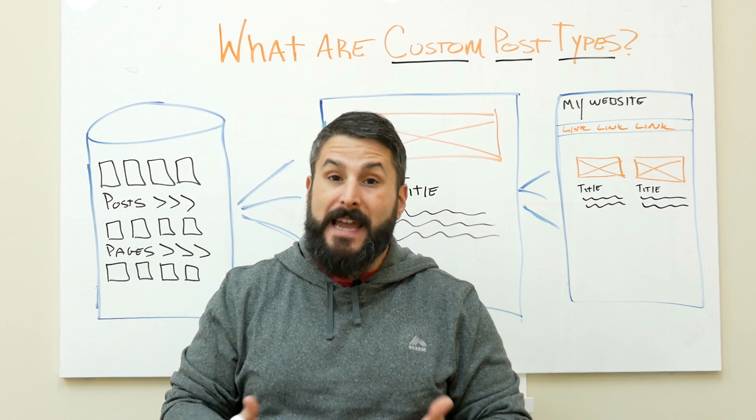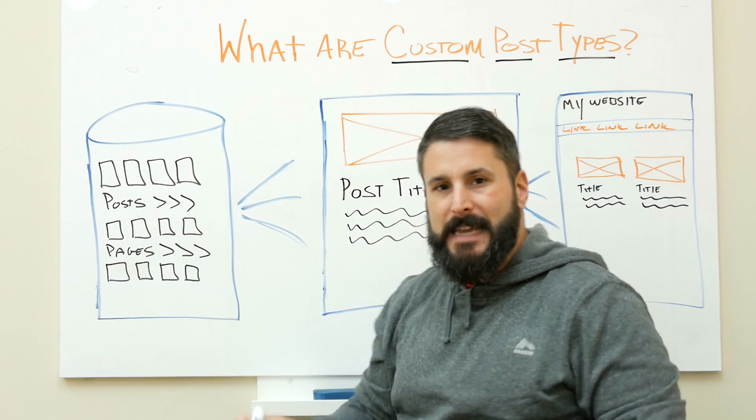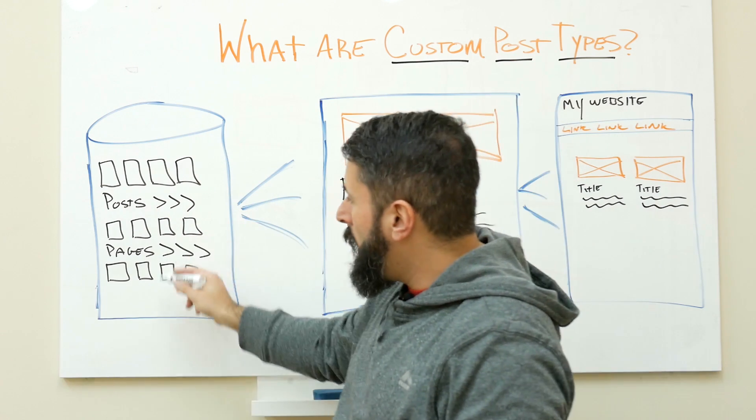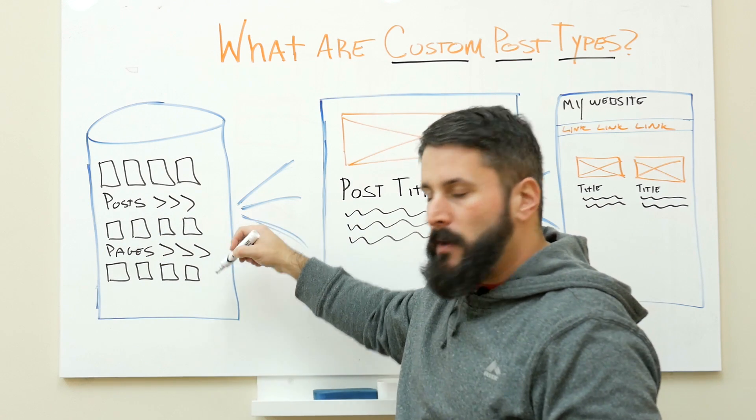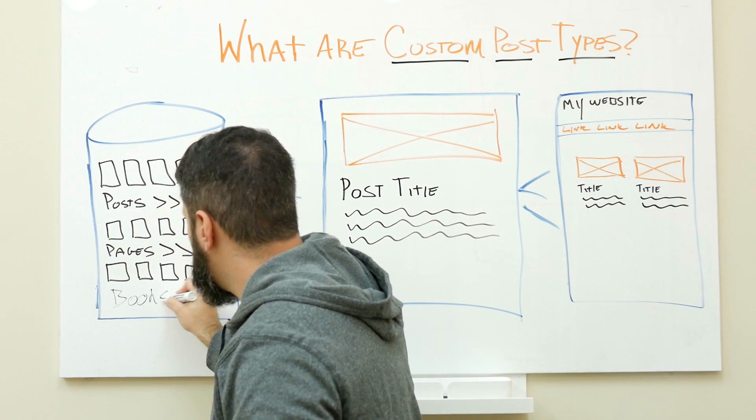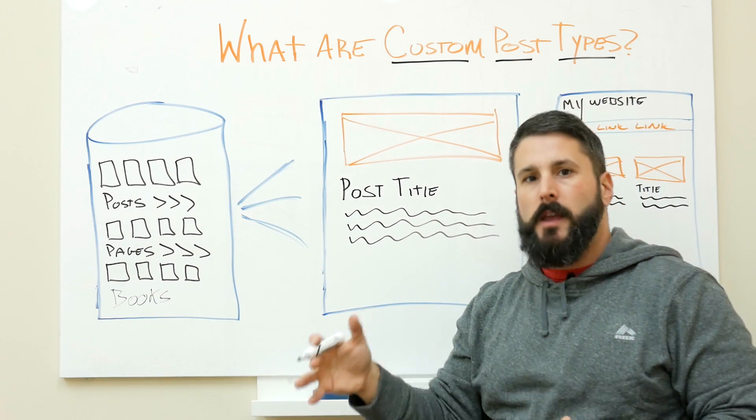When we create custom post types, what we're doing is we're telling the WordPress database to say, oh, you have these posts, you have these pages inside there, but now I want to make another collection in my database, maybe it's called books.